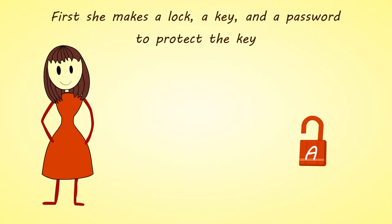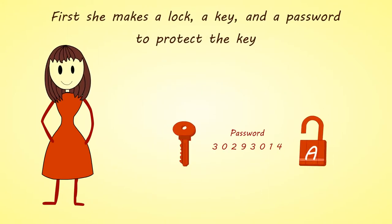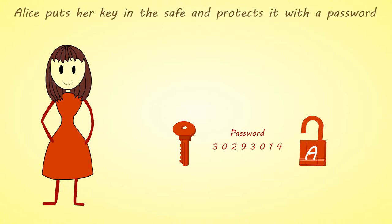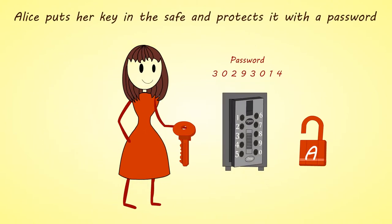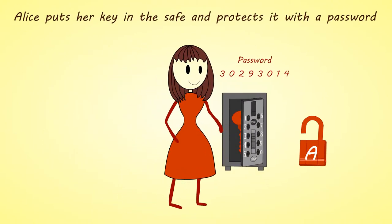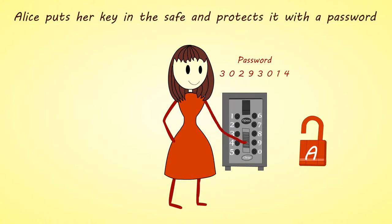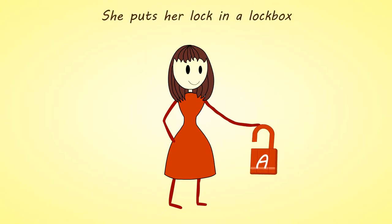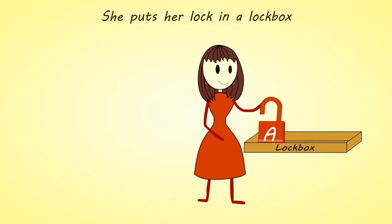First, she makes a lock, a key, and a password to protect the key. Alice puts her key in a safe and protects it with a password. She puts her lock in the lockbox.